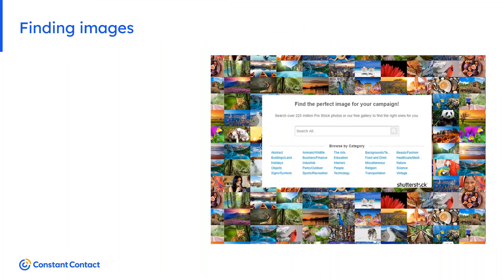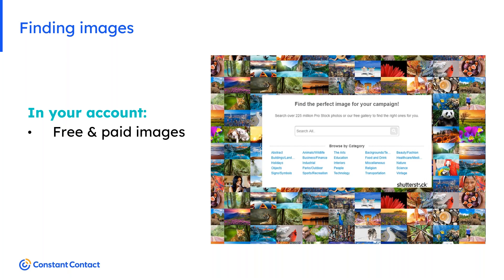Every email should have a supporting image. If you can use your own photos, that's best. If not, there are free and paid stock photos within your Constant Contact account. Avoid using random images from the internet due to copyright laws. One free resource I recommend is unsplash.com. Avoid images that look too staged — natural and realistic photos perform better. When downloading a photo, make sure the image is between 600 and 800 pixels wide for the best quality.